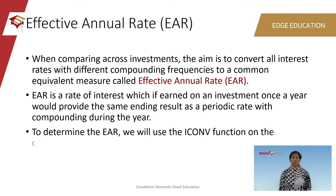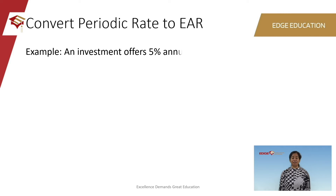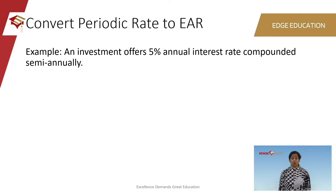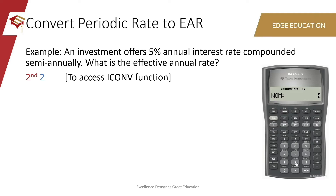To determine the EAR, we will be using the interest rate conversion function on the calculator, which is labeled ICONV, converting an annual periodic rate to EAR. Let's take an example. An investment offers 5% annual interest rate compounded semi-annually. What is the effective annual rate? To solve such a question, we will first get into the interest rate conversion application. To do that, go ahead and press 2nd, the yellow button, then number 2, which says ICONV — interest rate conversions.